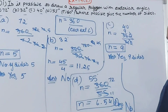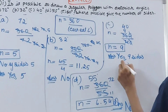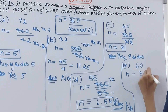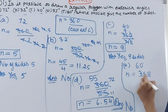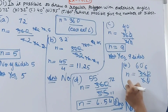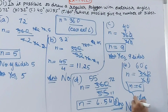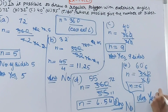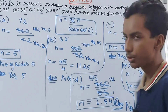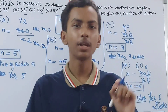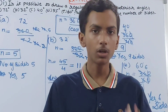For part e, the exterior angle is 60 degrees. So n will be equal to 360 divided by 60. Cancelling the zeros gives n equal to 6. So the answer for part e is yes, we can make a polygon, and it will have 6 sides. Remember: if the number of sides is a whole number it forms a polygon; if it is a decimal it does not.